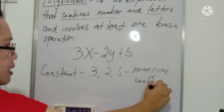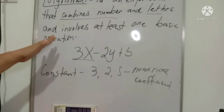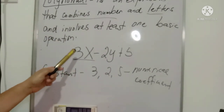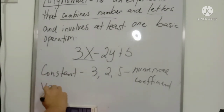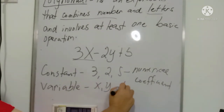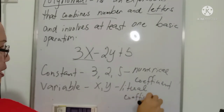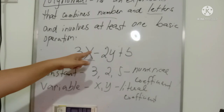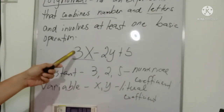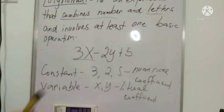So if we are going to identify, the numerical coefficient of 3x is three. What is a variable? In our example 3x minus 2y plus 5, the variables are x and y, and these are also called the literal coefficient. So three, two, and five are the constants, and x and y are the literal coefficients.